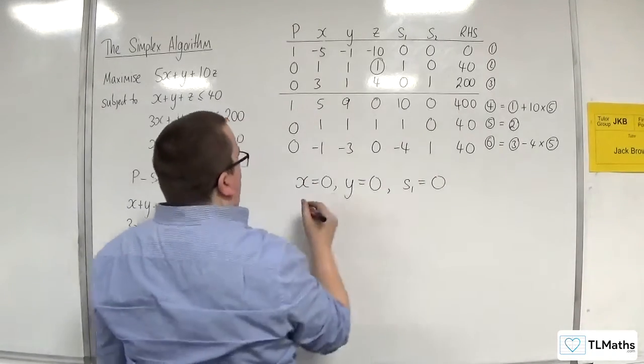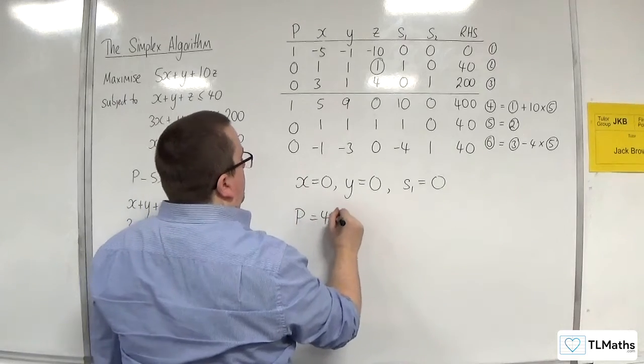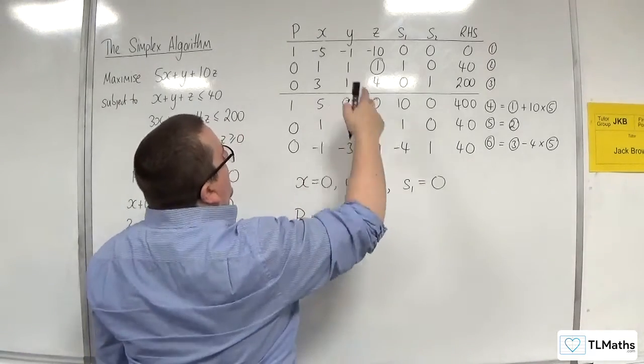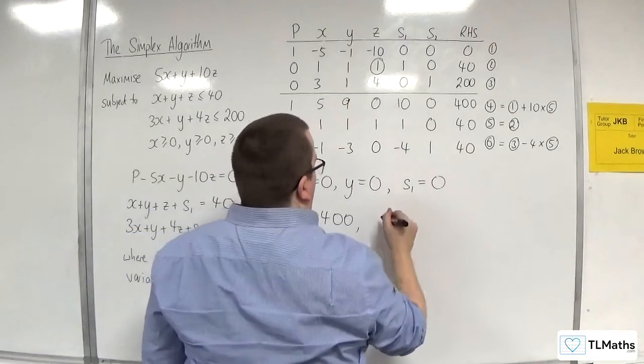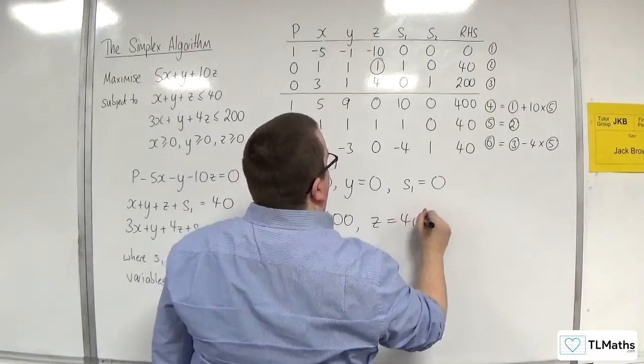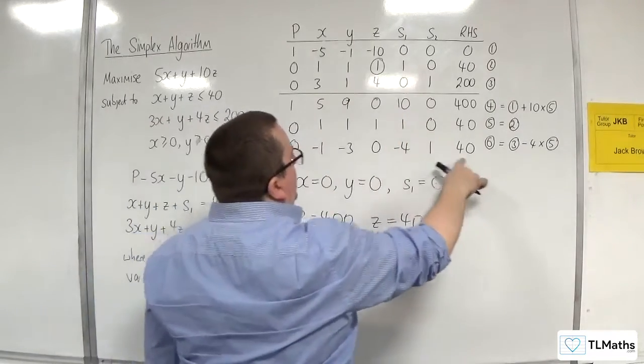P is basic, and that's going to be equal to 400. Z is basic, and that's equal to 40. And S2 is basic, and that's equal to 40.